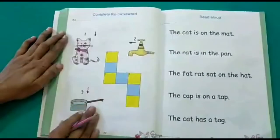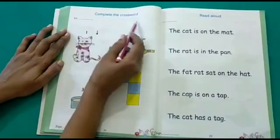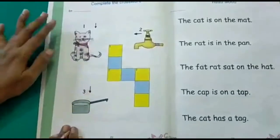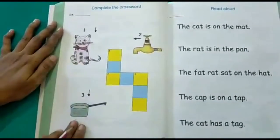Now the first activity, complete the crossword. So we have done a crossword earlier in the phonics book. This is something similar.